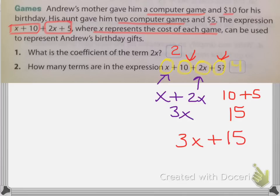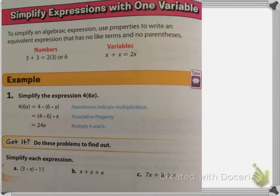Now we're on textbook page 496, so you want to turn the page. It says to simplify expressions with one variable. To simplify an algebraic expression, use properties — remember those properties we worked on — to write an equivalent expression that has no like terms and no parentheses. For example, 3 plus 3 equals 2 times 3, or 6. x plus x equals 2x. Let's go ahead and look at our first real example down here.